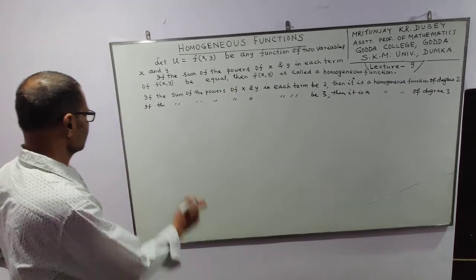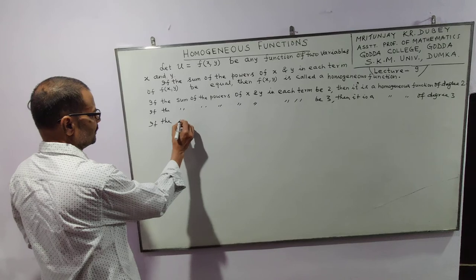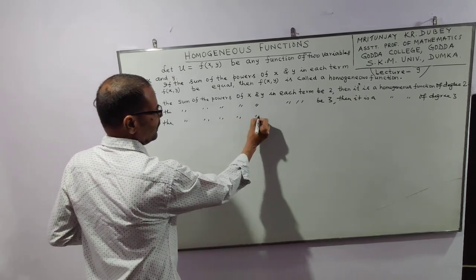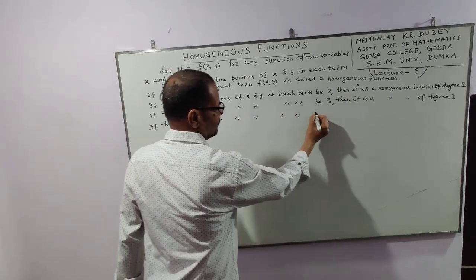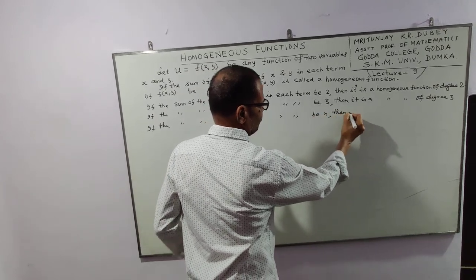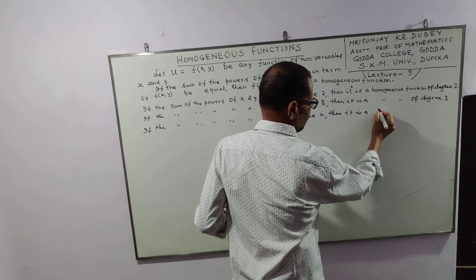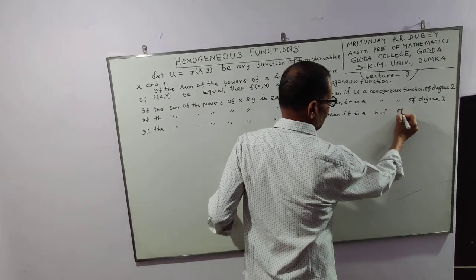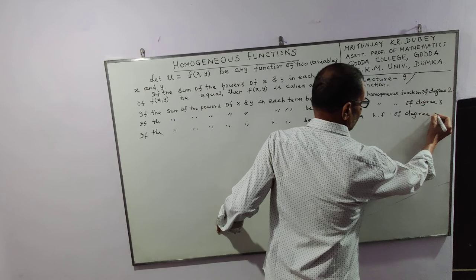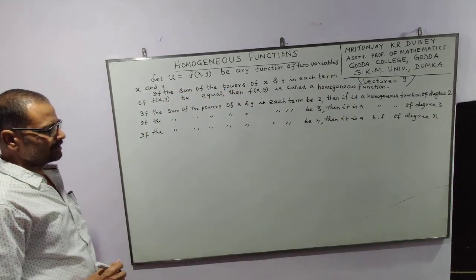If the sum of the powers of x and y in each term be n, then it is a homogeneous function of degree n. This is the definition.